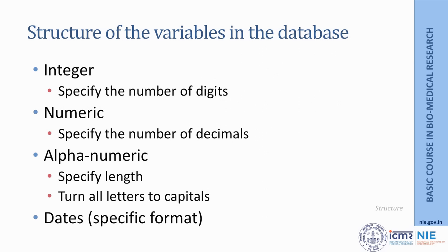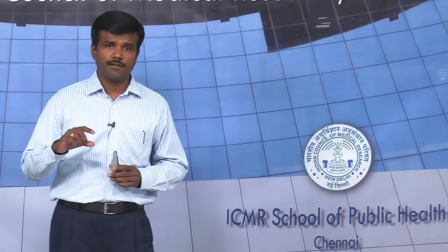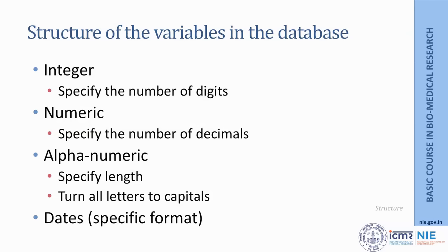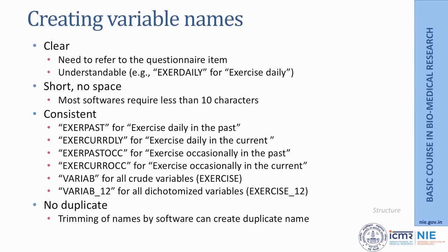You need to specify certain things about variables. As you may have seen in the lecture on measurement, there are different types of variables, and therefore it requires your attention from the beginning. You need to specify whether the variable will be entered as digits or, if numeric, whether the number of decimals is important. Variables can be entered as length, and when entering as both text and number, it is preferable to turn all letters into capitals to avoid errors. Finally, dates must be in a specific format — whether it is the Indian format of date, month, year, or month, date, then year.